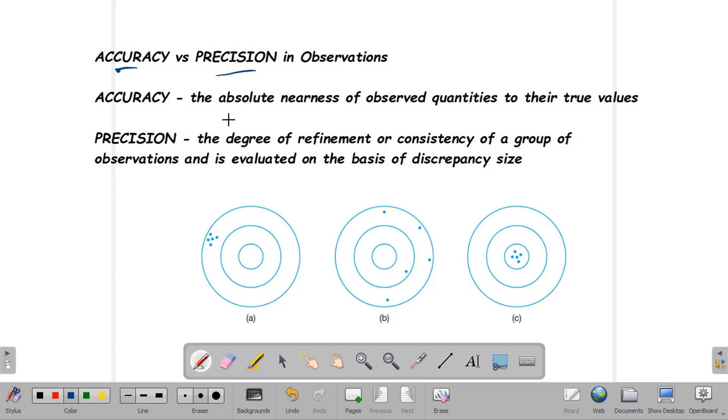By definition, accuracy is the absolute nearness of observed quantities to their true values - how near our observed values or measured distances are to the true lengths or true values.